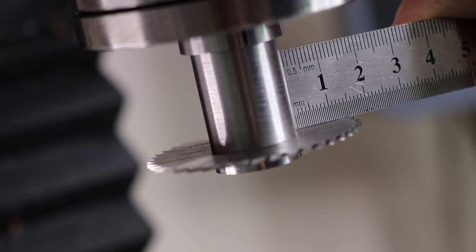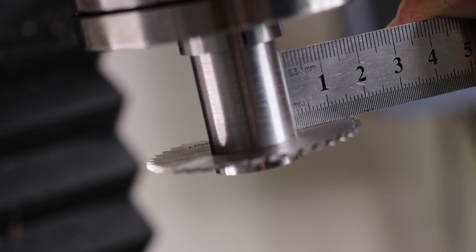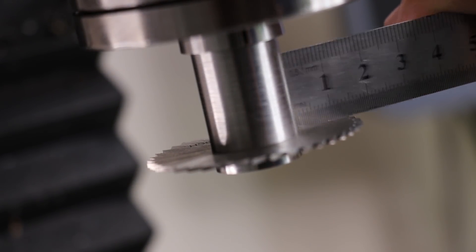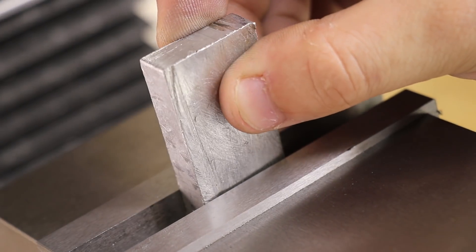With this slitting saw, the deepest cut I'll be able to take is about 15mm. The first test that I'll do will be in some aluminum.